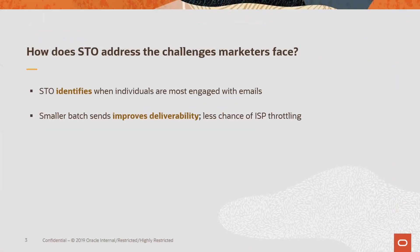So how does it address the challenges that marketers face? It identifies when individuals are most engaged with emails, taking away the guesswork of trying to send the message at that right time. And smaller batches means you're going to get improved deliverability, so less chance of ISP throttling.